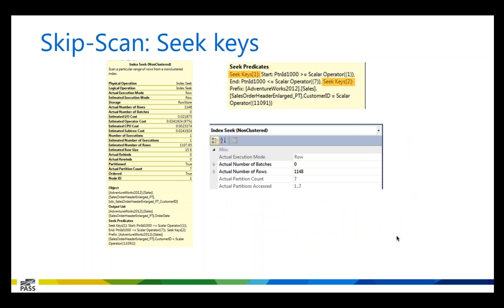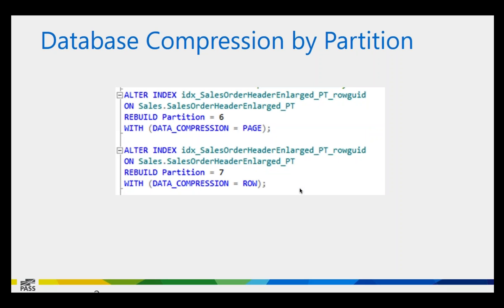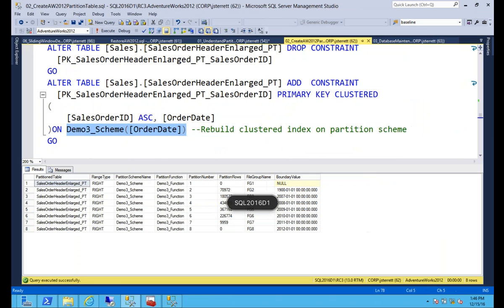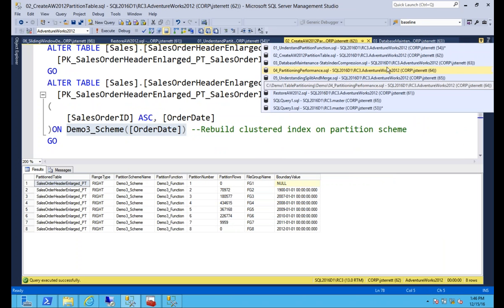With seeks, a seek predicate gets added automatically — the optimizer figures out which partitions are needed then uses your filter columns. A worst-case scenario is seeking across a partitioned table without filtering on the partition column, which forces touching every single partition. Here you can see all seven partitions being accessed, shown in the tooltip as '1..7' meaning partition one through seven. We also went over how compression can be controlled differently per partition.